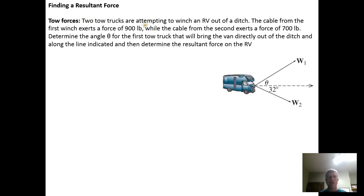So the story here is we have two tow trucks that are attempting to winch this RV out of a ditch. The cable from the first winch exerts a force of 900 pounds, so we're being told that the tension in this cable is 900 pounds.